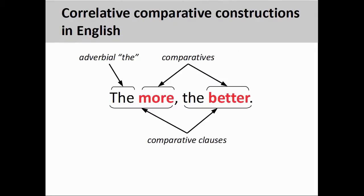Correlative comparative constructions consist of two parallel comparative clauses, each containing at least an adverbial 'the' and a comparative adjective or adverb; these clauses can be further modified with additional noun and verb phrases. The correlative comparative expresses a proportional dependence between the notions expressed in the two clauses. For example, the sentence could express the relationship between increased studying and improved grades: 'the more I study, the better my grades are'.